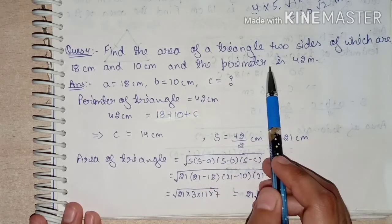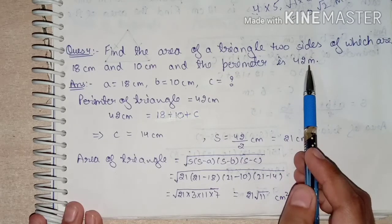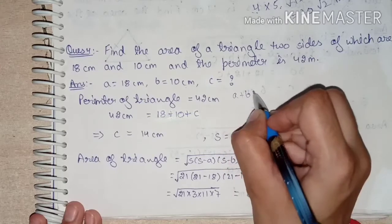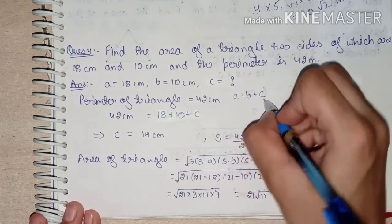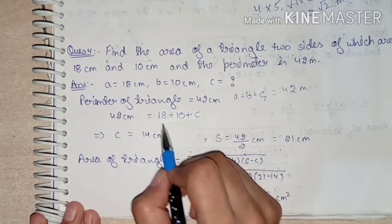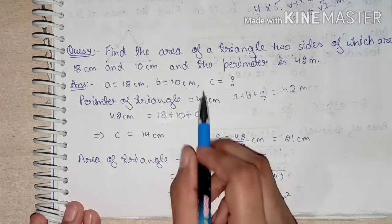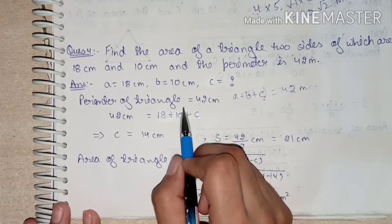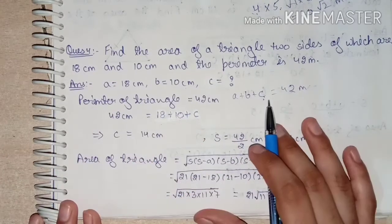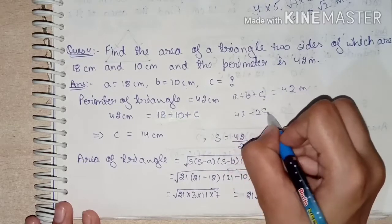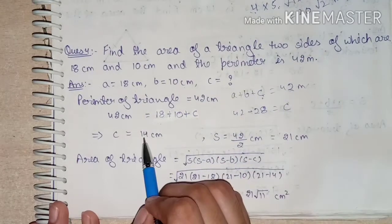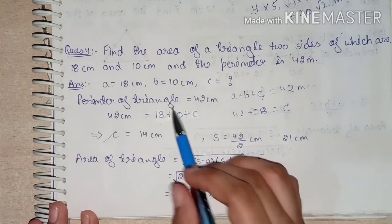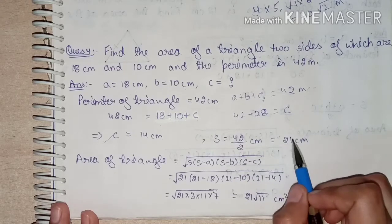The perimeter is given as 42 cm. Using the perimeter formula: a + b + c = 42. Substituting a = 18, b = 10: 18 + 10 + c = 42, so 28 + c = 42, which gives c = 42 − 28 = 14 cm. Now we have all three sides. Semi-perimeter s = 42 / 2 = 21 cm.